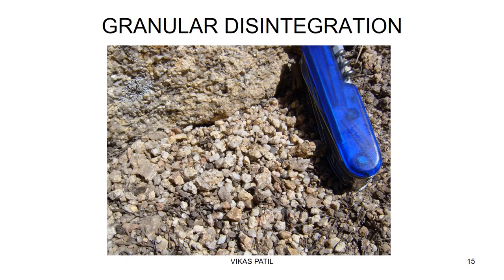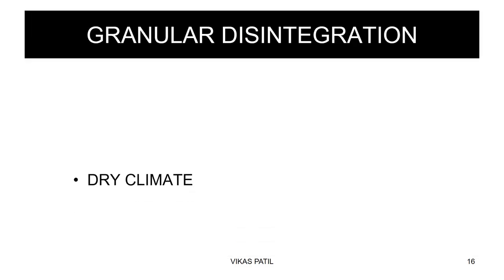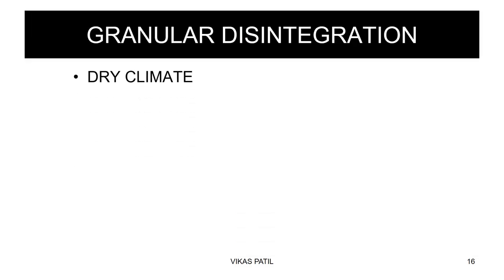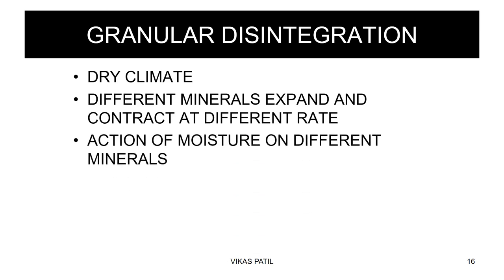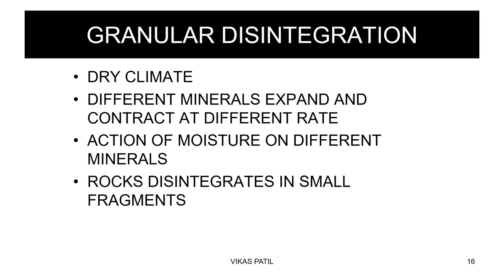Granular disintegration: here the rock disintegrates into grains of minerals. For granular disintegration, we need a dry climate with no water involved. Since different minerals react differently to temperature, they expand and contract at different rates. As this happens again and again and the minerals come into contact with moisture on a regular basis, these minerals start disintegrating and the rock breaks down into smaller fragments.